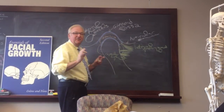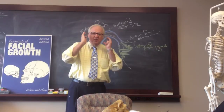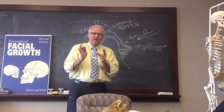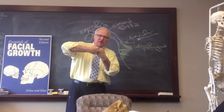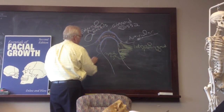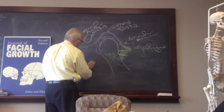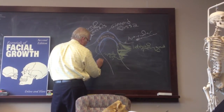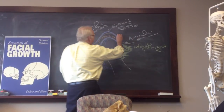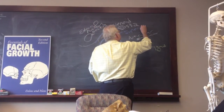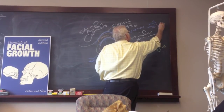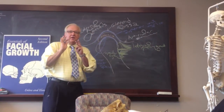In the temporomandibular joint you've got two spaces: a space between the meniscus and the condyle head, and a space between the meniscus and the glenoid fossa. We call them tissue spaces because tissues can slide within them. This one is the inferior joint space, and the other one is the superior joint space — and in between those we've got the meniscus.